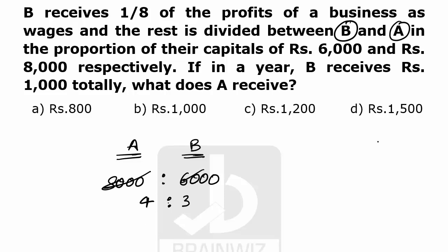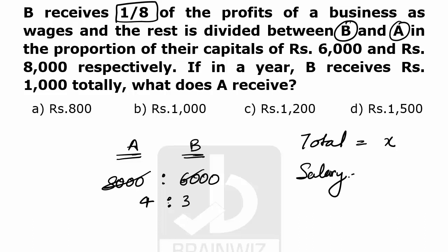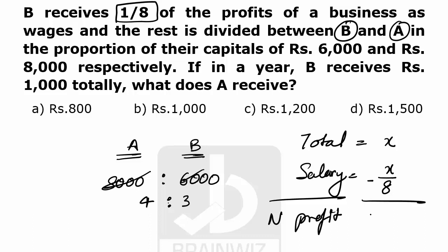In this question, the total profit is not mentioned. Let's say the total profit is rupees X, in which one-eighth is taken as salary. So salary is X by 8, and the net profit remaining is 7X by 8.